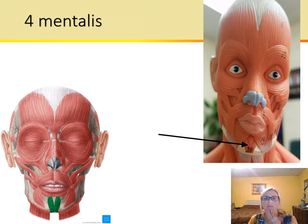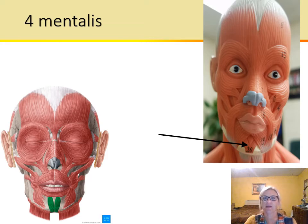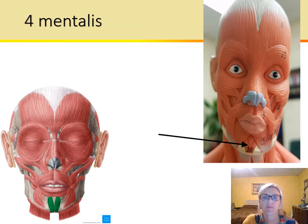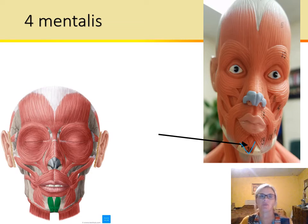Next we have the mentalis. Remember from skeletal we have the mental foramen — 'mental' refers to the chin. This is a paired set of chin muscles and it elevates the chin. You can see the V shape clearly on the left, and remember this is a paired set of muscles.